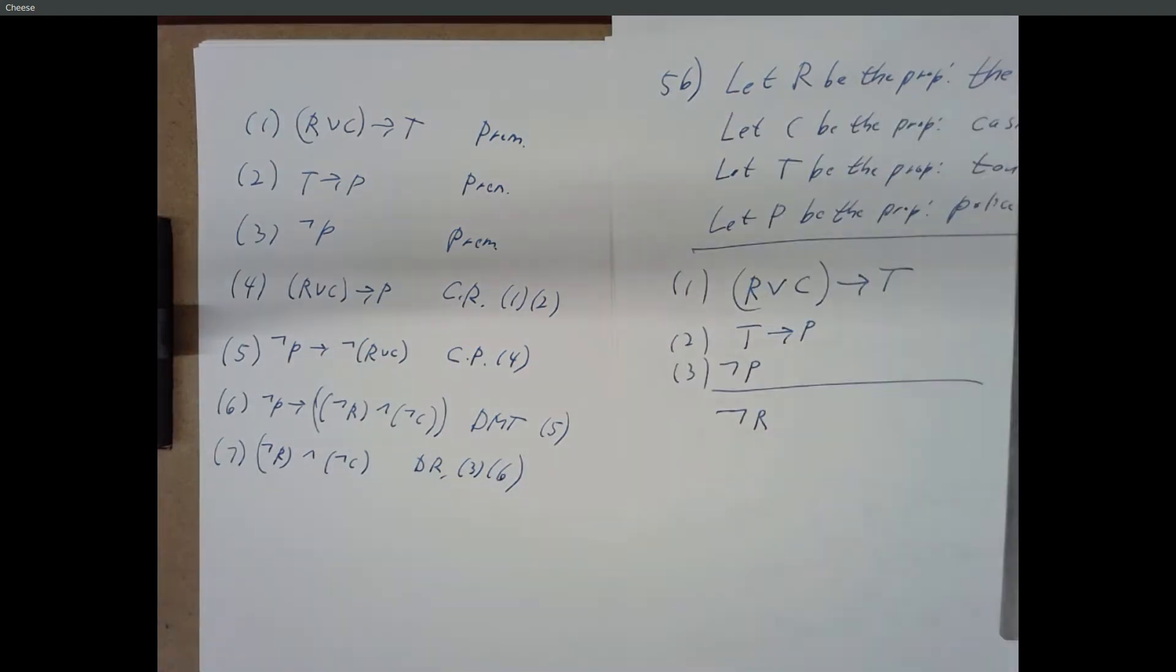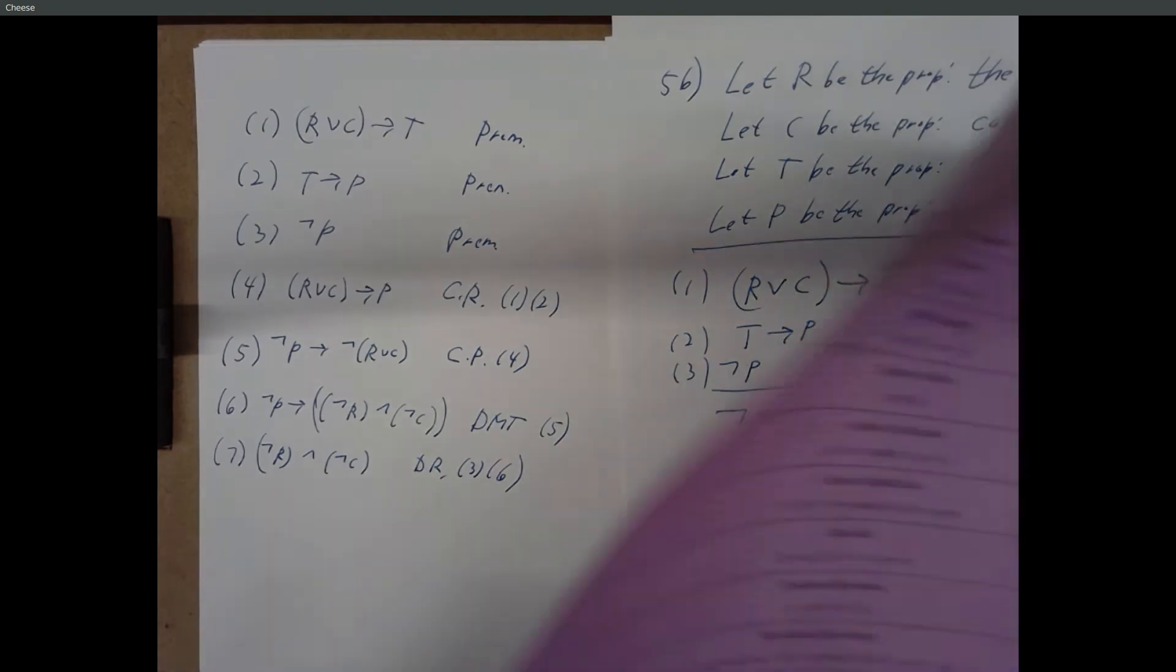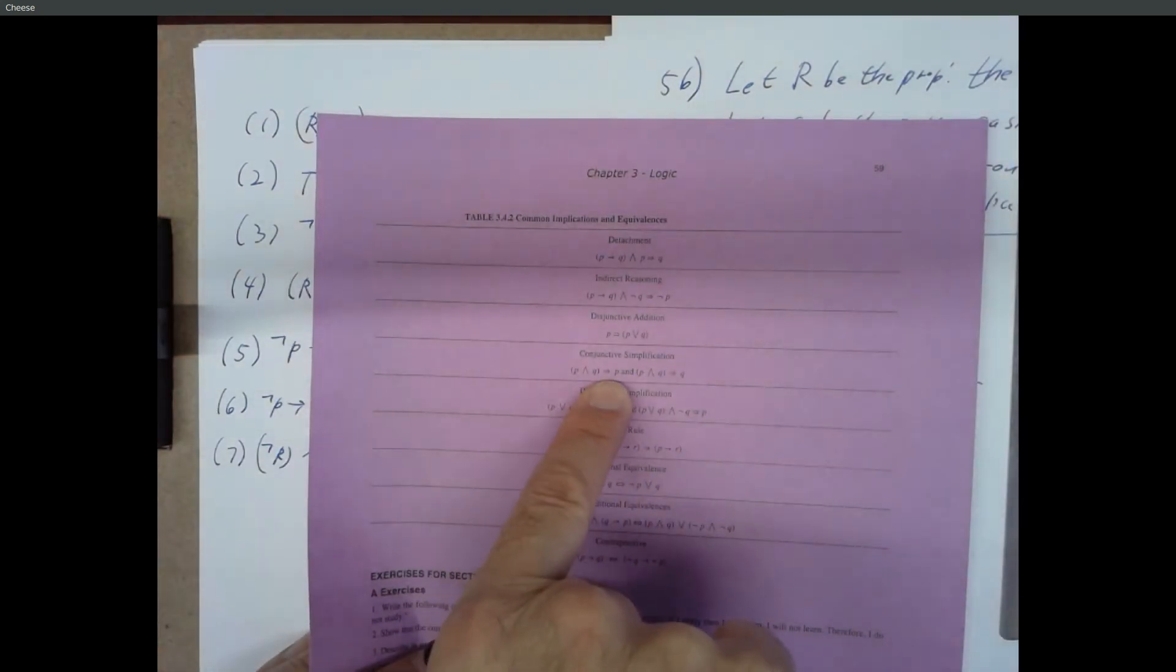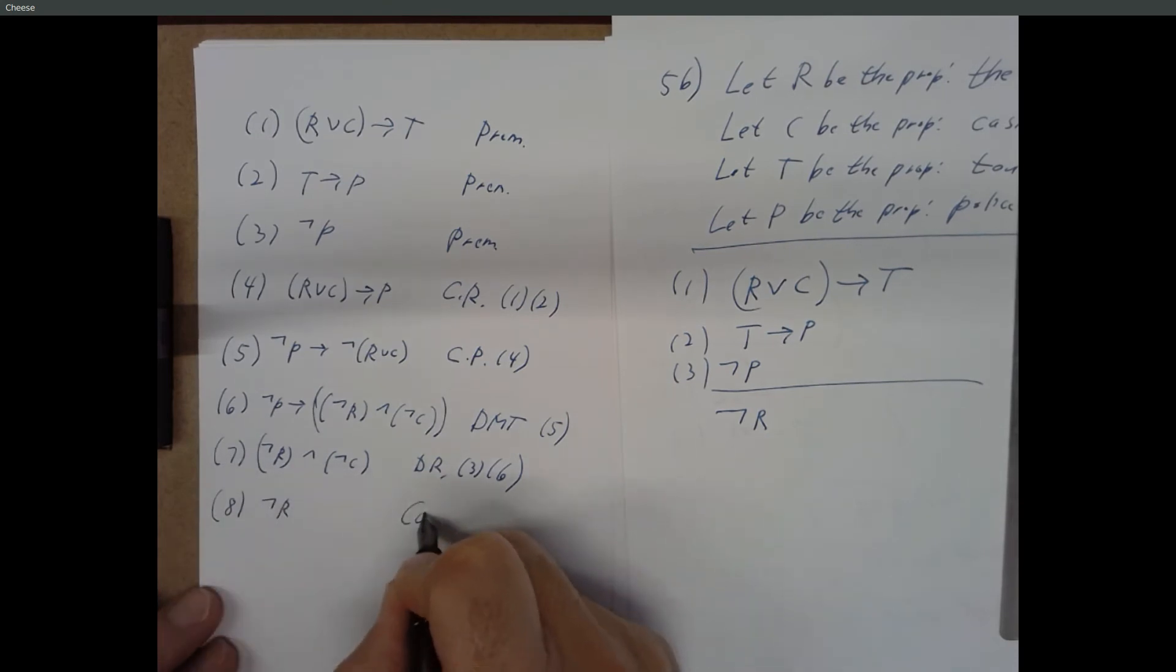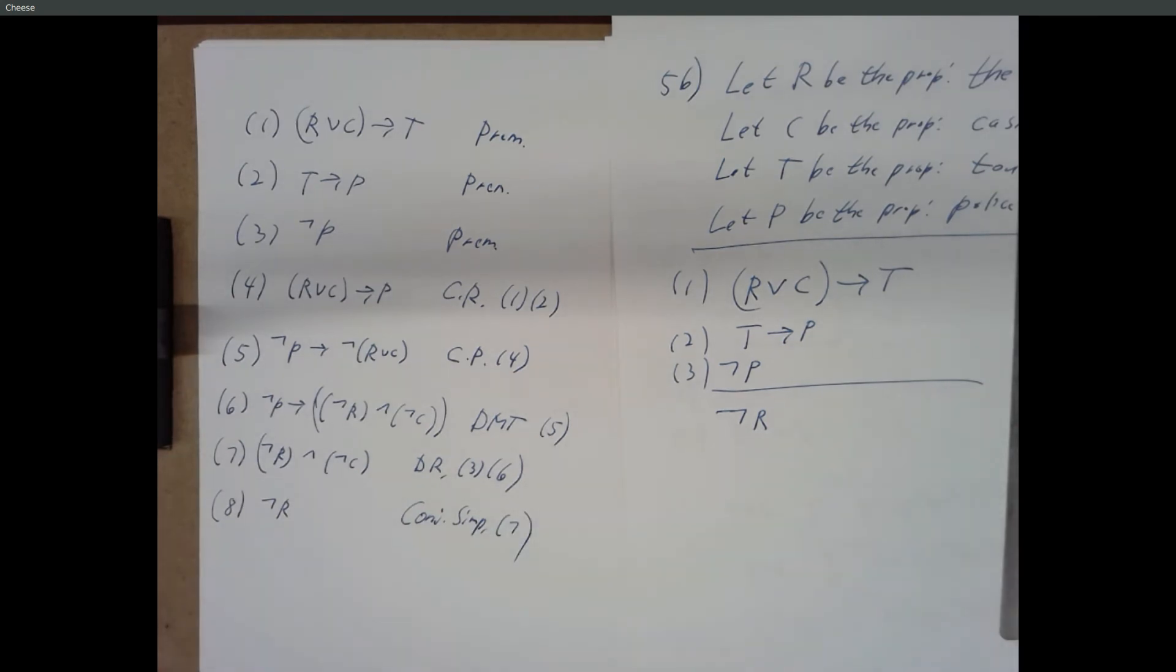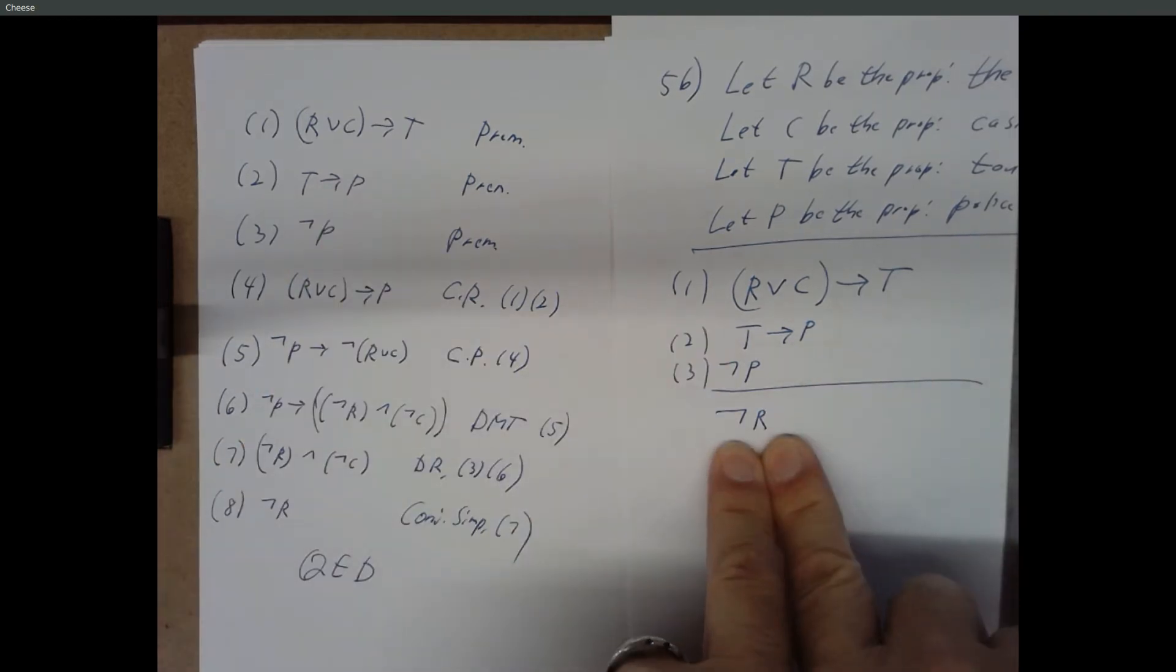And we're trying to get to not R. Conjunctive simplification, right? Conjunctive simplification. P and Q gives us P. Not R and not C gives us not R. And there we go. That's what we were asked to show. So yeah, that argument is logically sound. And there's a proof that given these three things, we can conclude not R.